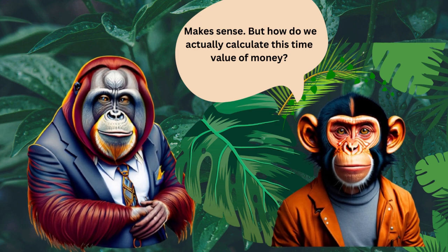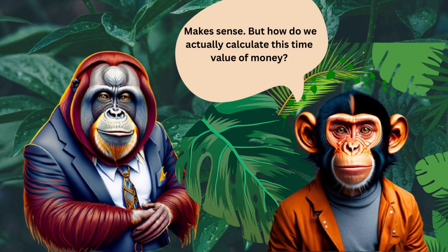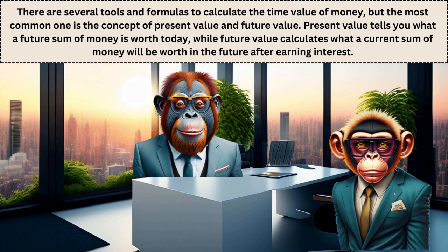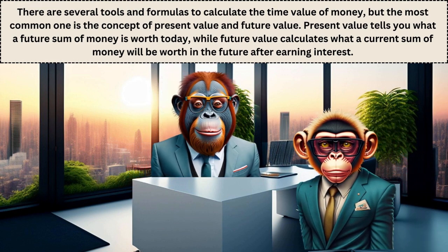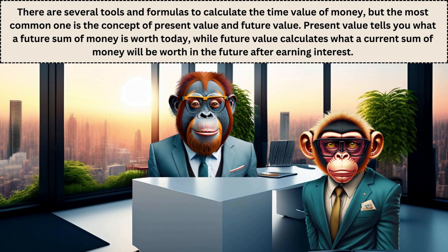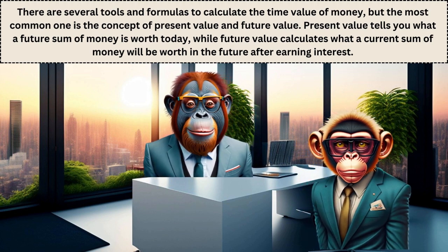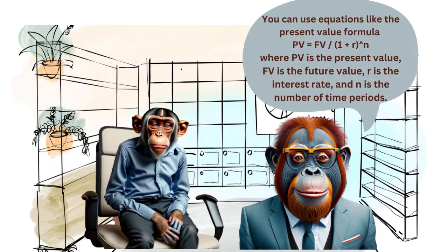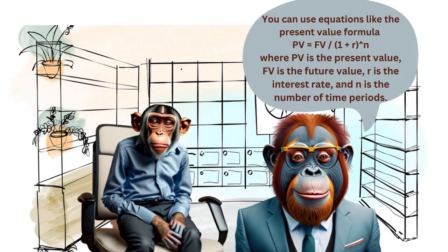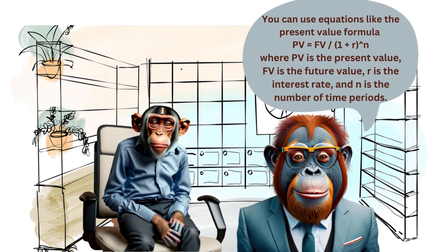But how do we actually calculate this time value of money? There are several tools and formulas, but the most common involve the concepts of present value and future value. Present value tells you what a future sum of money is worth today, while future value calculates what a current sum will be worth in the future after earning interest. You can use the present value formula: PV = FV / (1 + r)^n, where PV is the present value, FV is the future value, r is the interest rate, and n is the number of time periods.